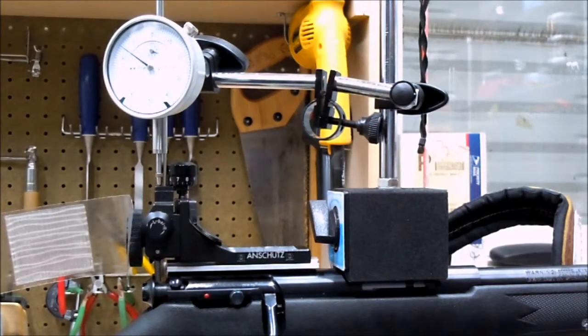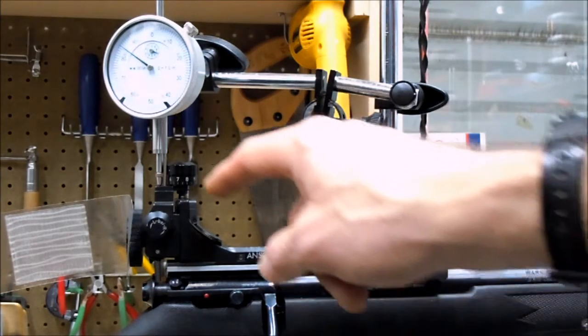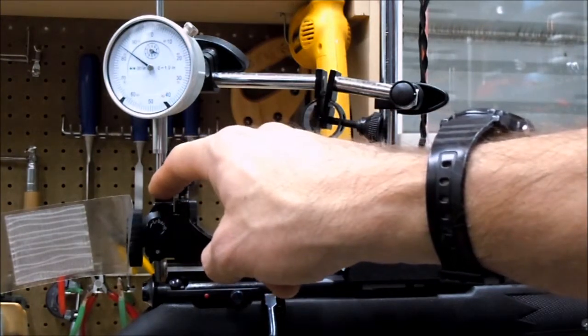Hi everybody. Today we are going to measure the vertical gap on the Anschutz biathlon rear sight. To make this measurement I installed the dial indicator on the action of the rifle and its tip is touching the top part of the rear sight.